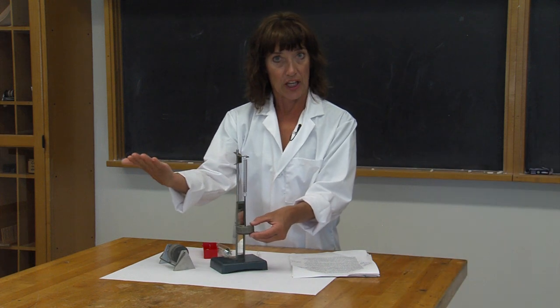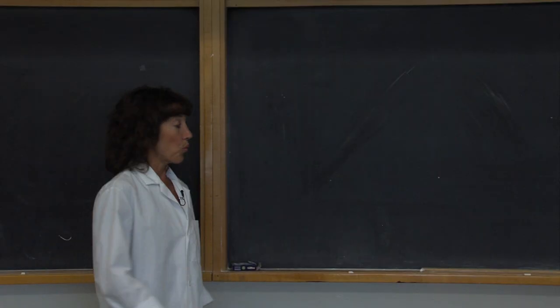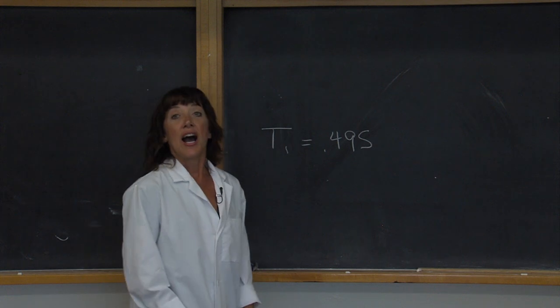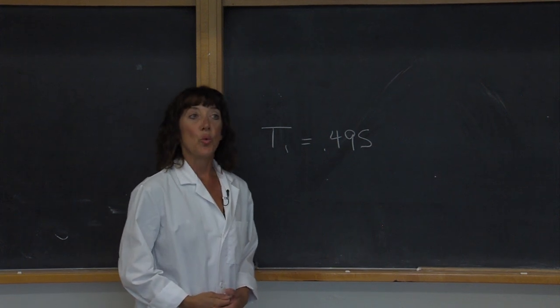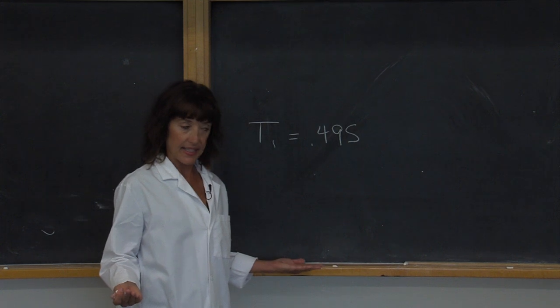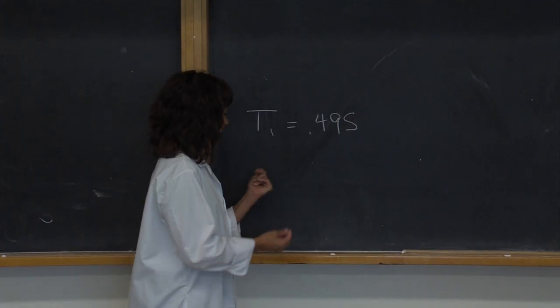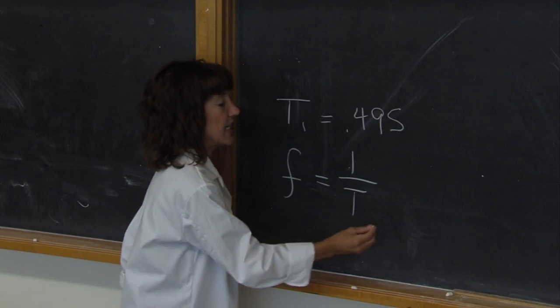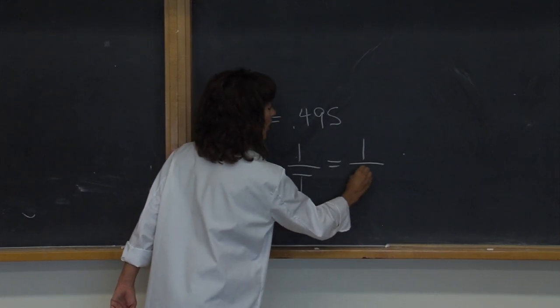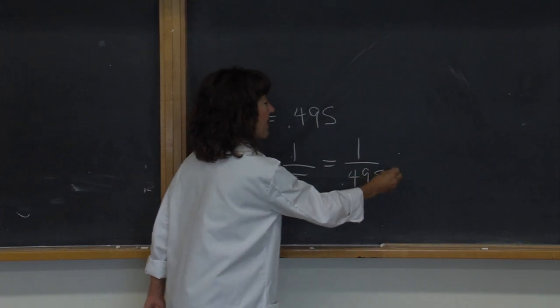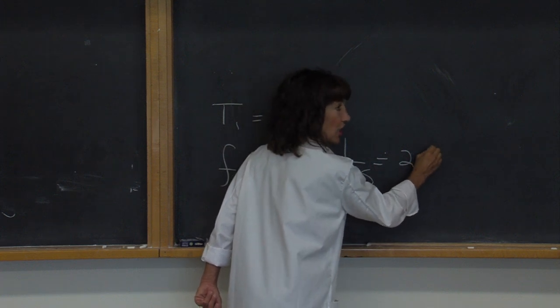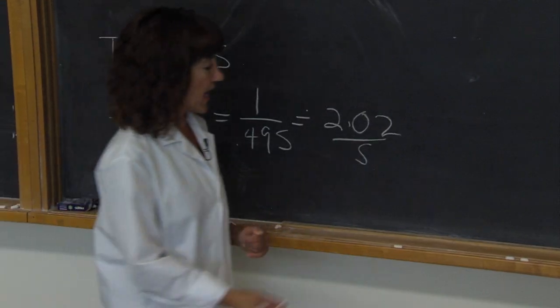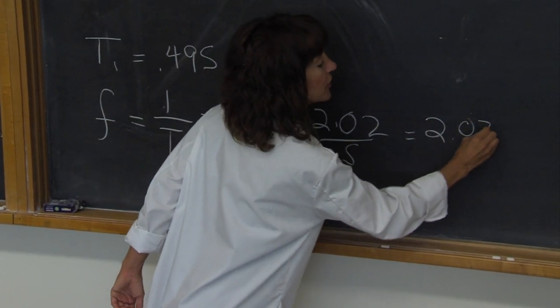Okay, so we're going to use this value to calculate k. Our time for one oscillation was 0.495. I am interested in the frequency, which is the amount of oscillations per second. To get that value, I will take the inverse of this. So f is going to equal 1 over t, and that equals 1 over 0.495. And that value is 2.02, and that would be over seconds. This is also known as 2.02 hertz.